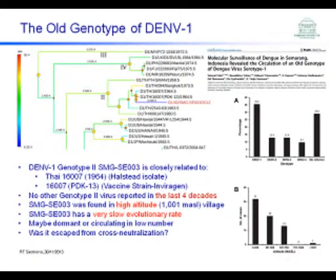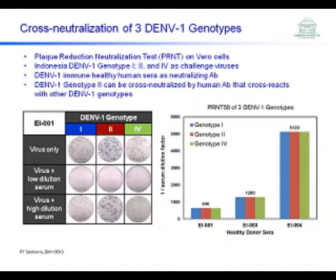Interestingly, this genotype was found in a high altitude village area near Mount Ungaran. It has a very slow evolutionary rate. We don't know the explanation yet, but it could be that this genotype is dormant or circulating in low numbers. It is also quite interesting to know whether this genotype escapes cross-neutralization. We tried to confirm whether this genotype 2 is cross-neutralized by antibodies against other genotypes.